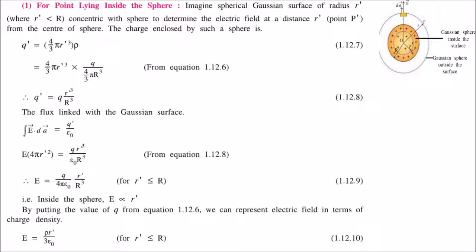So q' (the enclosed charge) will be 4/3 π (r')³ ρ. This is how we find the charge enclosed by the inner Gaussian surface.